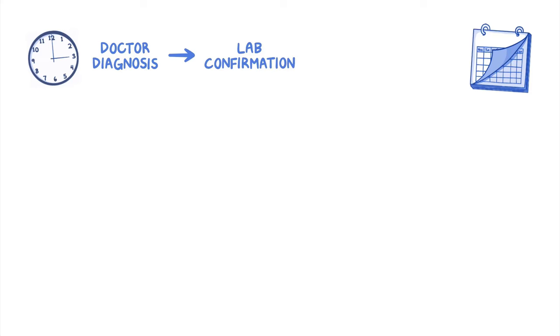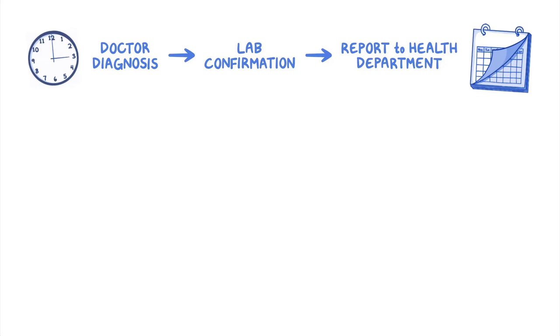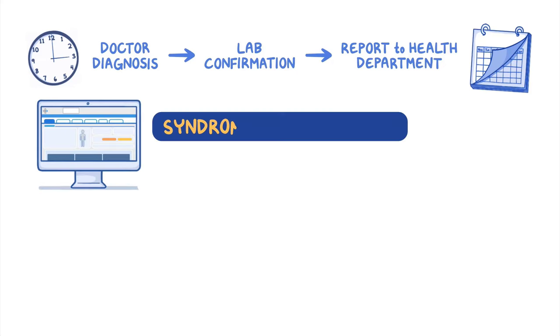It can take days or even weeks after a person first feels ill for a doctor to determine what disease that patient has, for lab tests to confirm the diagnosis, and for the report to be sent to the local health department using a passive surveillance system. During this time, outbreaks may go undetected and timely intervention may be delayed. A newer type of surveillance, syndromic surveillance, was developed to address these challenges.